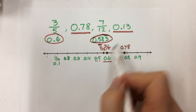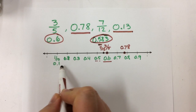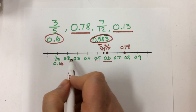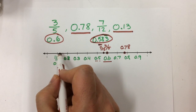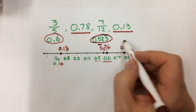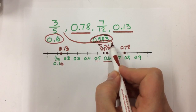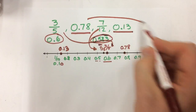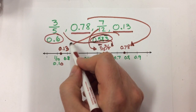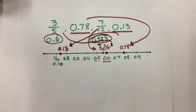The last number is 13 hundredths. That's going to go closer to this number here — closer to 1 tenth than to 2 tenths. So that's going to go right about there. Now I have labeled all my places on my number line, and each of these goes in a different spot.